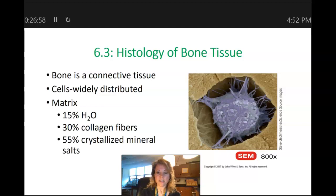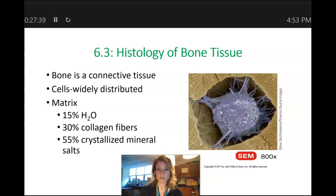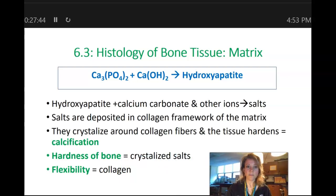Collagen is going to give bone a little bit of flexibility — so you can swing on a swing, jump off, land on the ground, and live to tell the tale, because you do have a little flexibility in your bones. If you didn't have that collagen, your bones would shatter all the time. The ground substance surrounding these collagen fibers is made up of water and also crystallized mineral salts. These crystallized mineral salts are largely made of hydroxyapatite — calcium phosphate combining with calcium hydroxide produces this large molecule called hydroxyapatite.